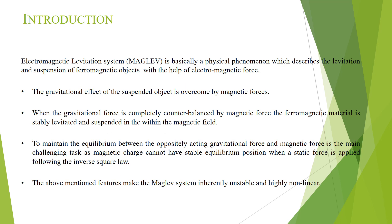Coming to the introduction, electromagnetic levitation system has been emerging as a brand new engineering scientific technology in the field of modern engineering over the past few decades. In this system, a ferromagnetic object is suspended and levitated in the air with the help of electromagnetic forces without any kind of mechanical support. The gravitational effect on the suspended object is completely counterbalanced by the electromagnetic force. When a stable equilibrium is reached between the oppositely acting gravitational and electromagnetic force, the ball stably levitates in the air.